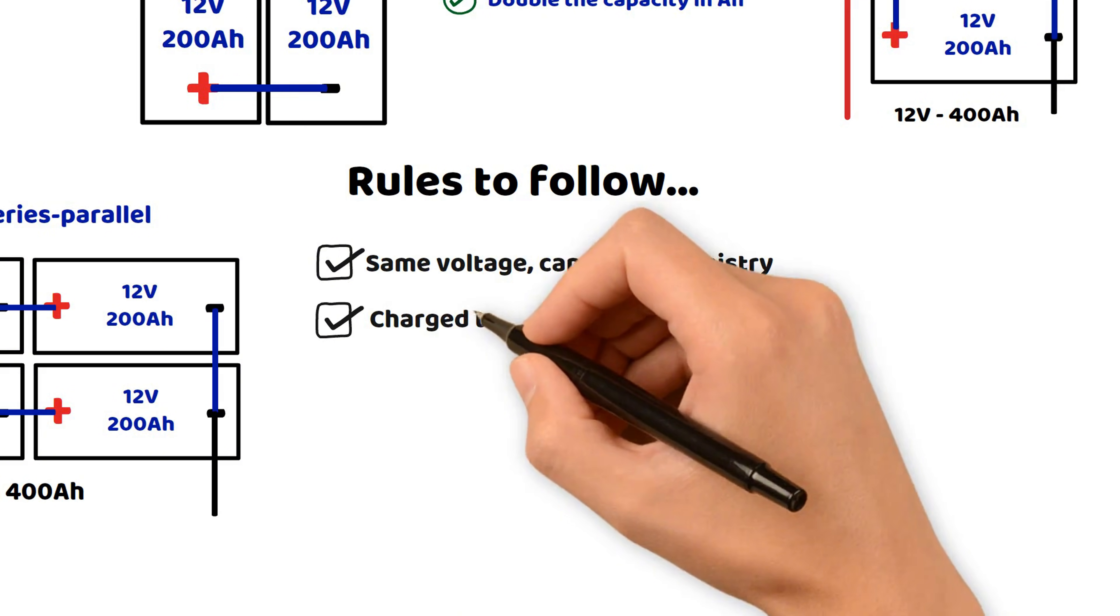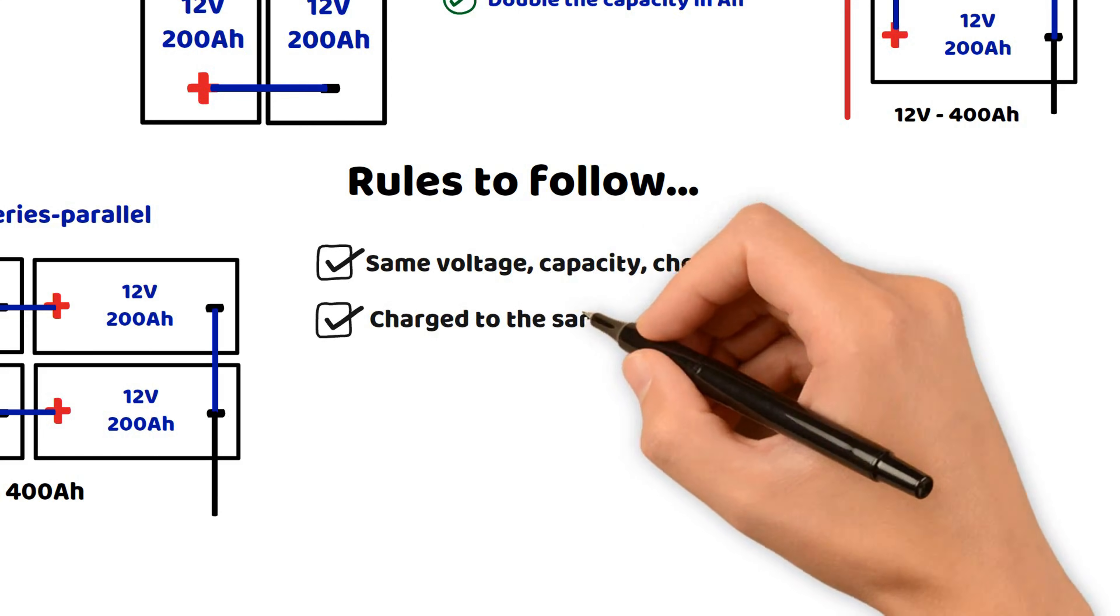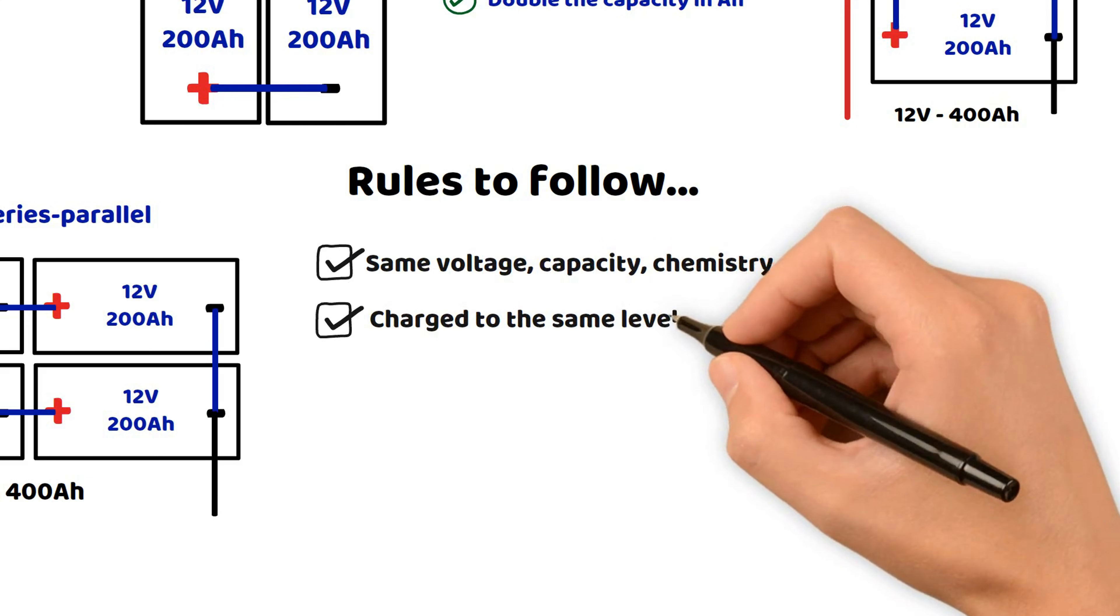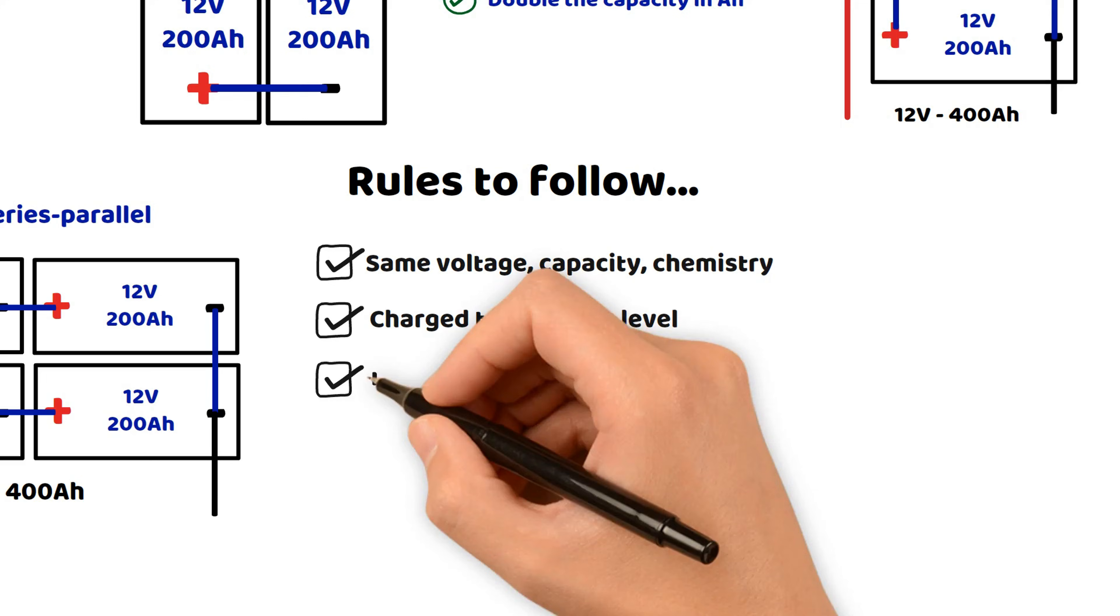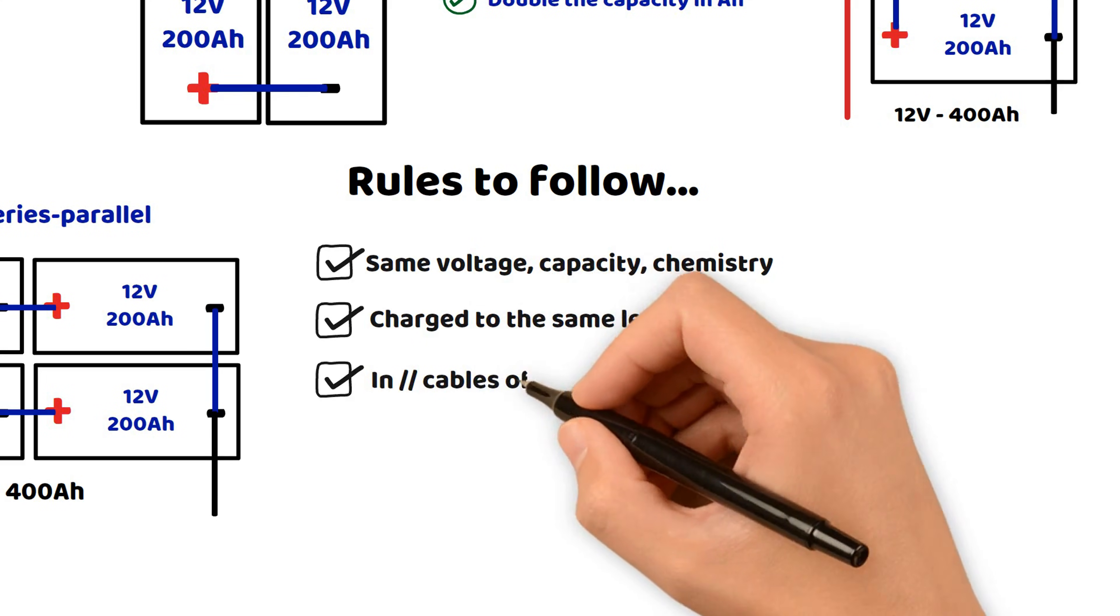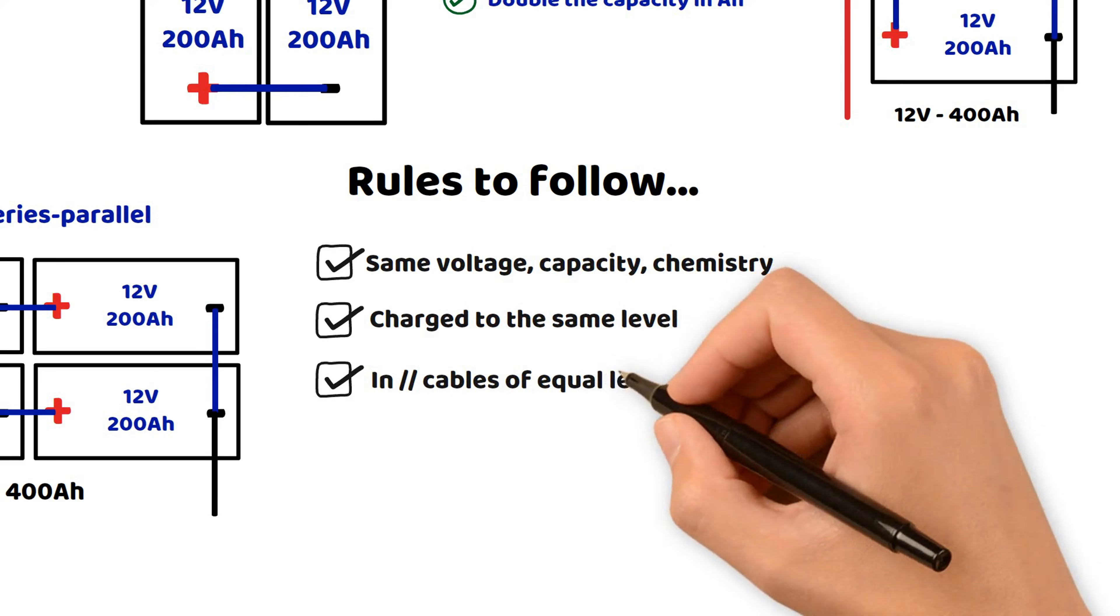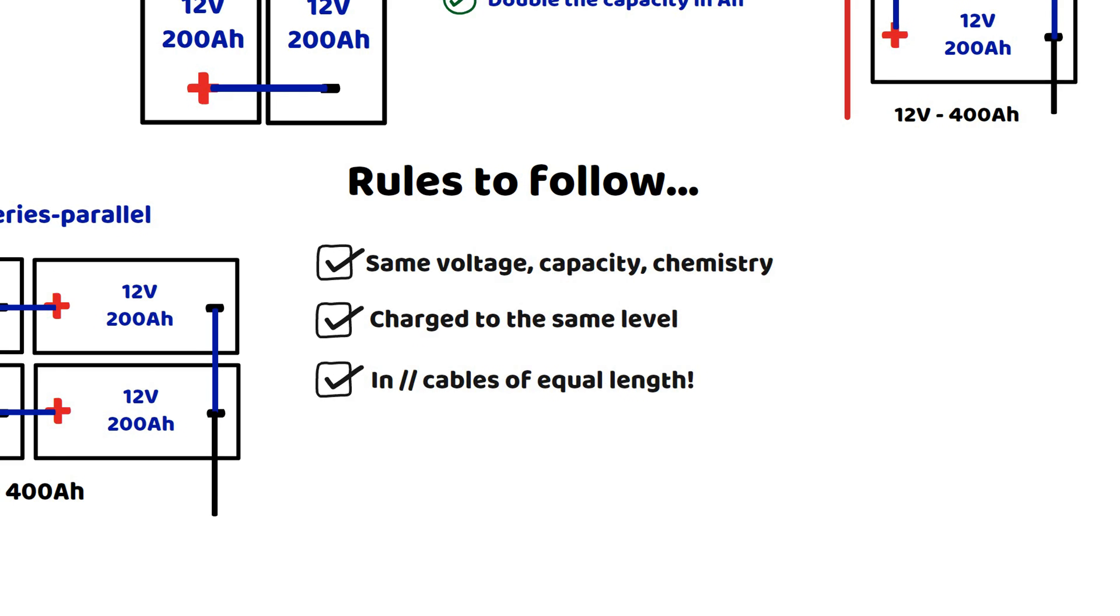In a parallel connection, the cables linking each battery must be of equal length, otherwise some batteries will be more heavily used than others. This reminder of the fundamentals lays the necessary groundwork to understand the configuration choices we are going to explore through practical case studies.